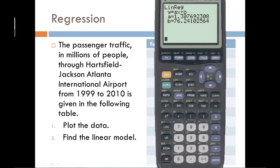And we should get this screen. And it says we have a linear regression that's, again, of the form Y equals AX plus B. It tells us A is 1.307, and it tells us B is 76.241.